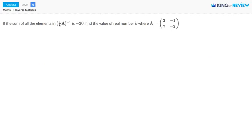Hi, this is King of Review. If the sum of all of the elements in the inverse of 1 over k times A is equal to negative 30, find the value of the real number k, and we're given the matrix A here.